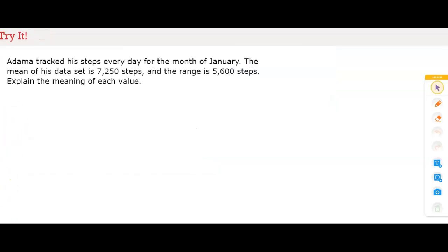Adama tracked his steps every day for the month of January. The mean of his data set is 7,250 steps. And the range is 5,600 steps. Explain the meaning of each value.